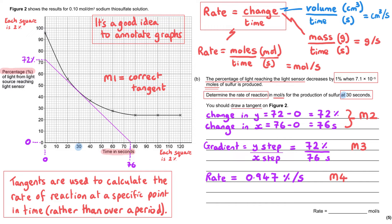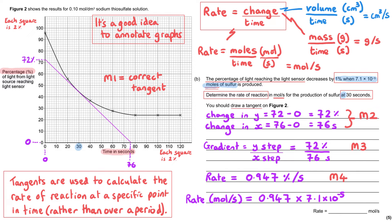That value of 0.947 is the percentage of light per second, but we need moles per second. We must convert percentage per second into moles per second. We were told that a change of 1% corresponds to 7.1×10⁻⁵ moles of sulfur produced. Our percentage change is just under 1%, so the moles produced will be just under 7.1×10⁻⁵. We calculate this by multiplying 0.947 by 7.1×10⁻⁵, giving 6.73×10⁻⁵ moles per second.